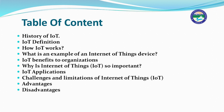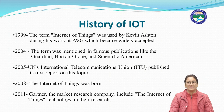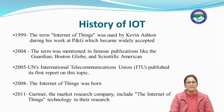examples of an IoT device, IoT benefits to organizations, why Internet of Things is so important, IoT applications, challenges and limitations of IoT, and advantages and disadvantages of IoT. Now, the history of IoT: way back in 1999, the term Internet of Things was coined by Kevin Aston during his work at P&G, which became widely accepted. In 2004, the term was mentioned in famous publications like the Guardian, Boston Globe, and Scientific American. In 2005, the UN's International Telecommunication Union published its first report on this topic.